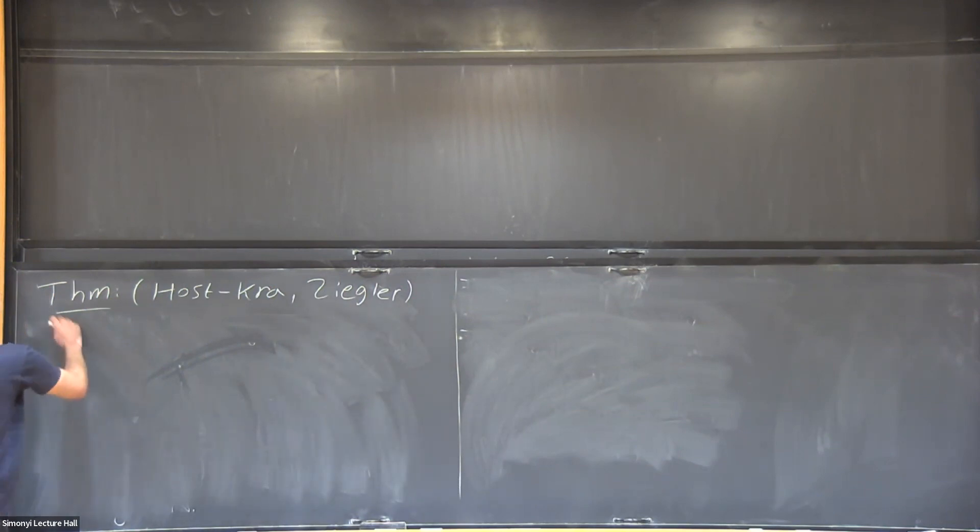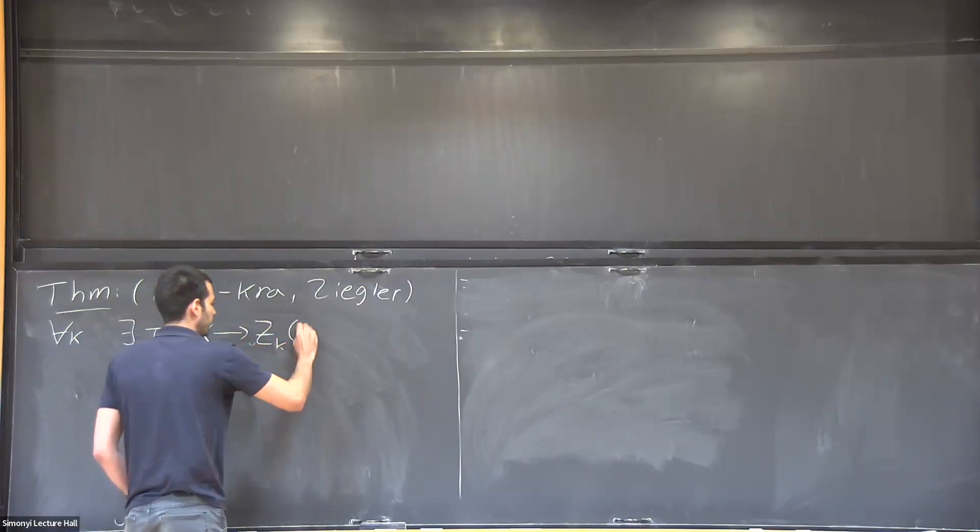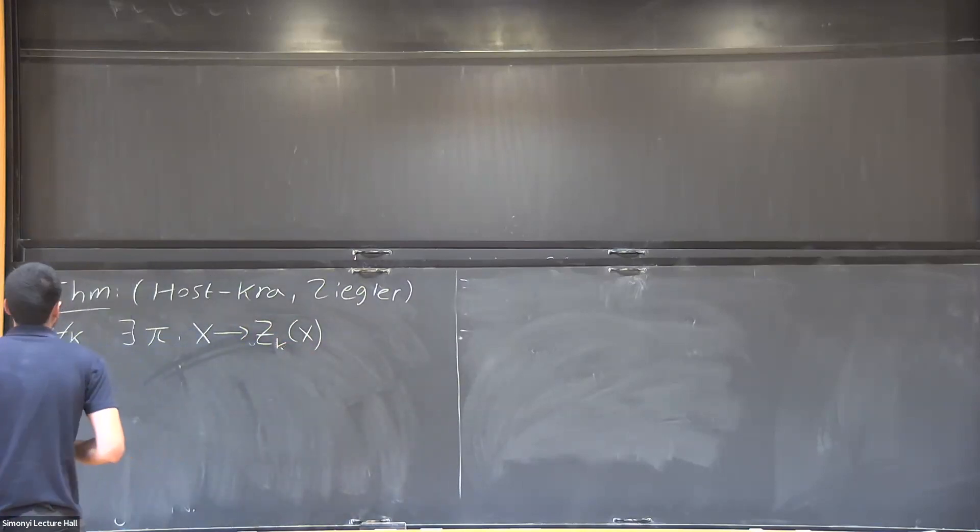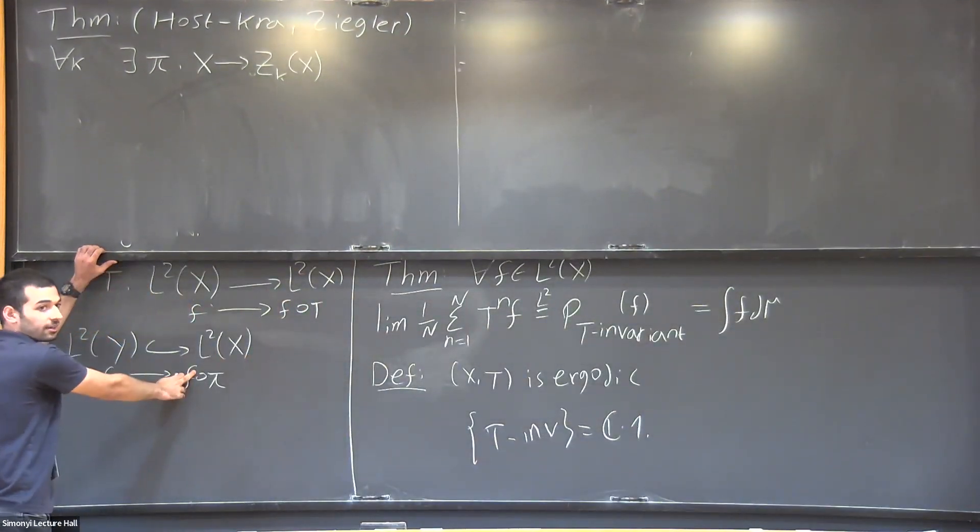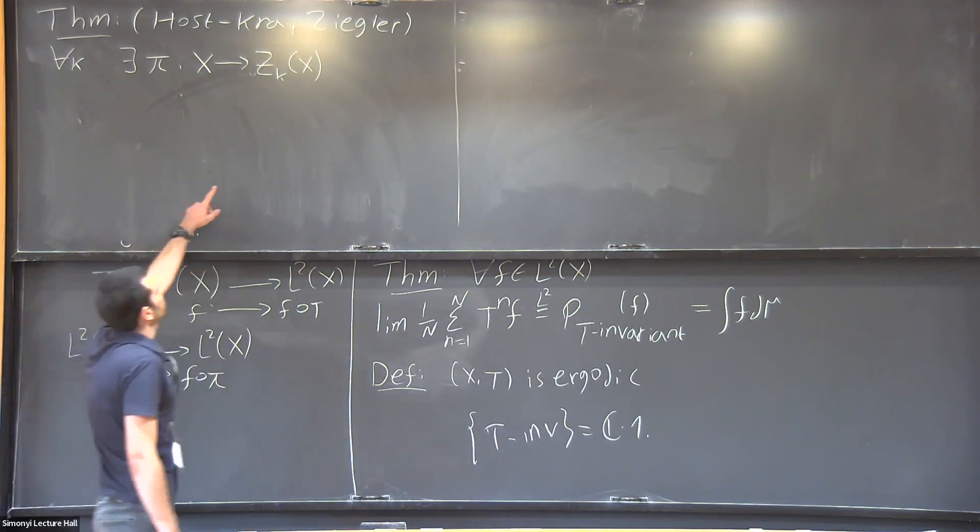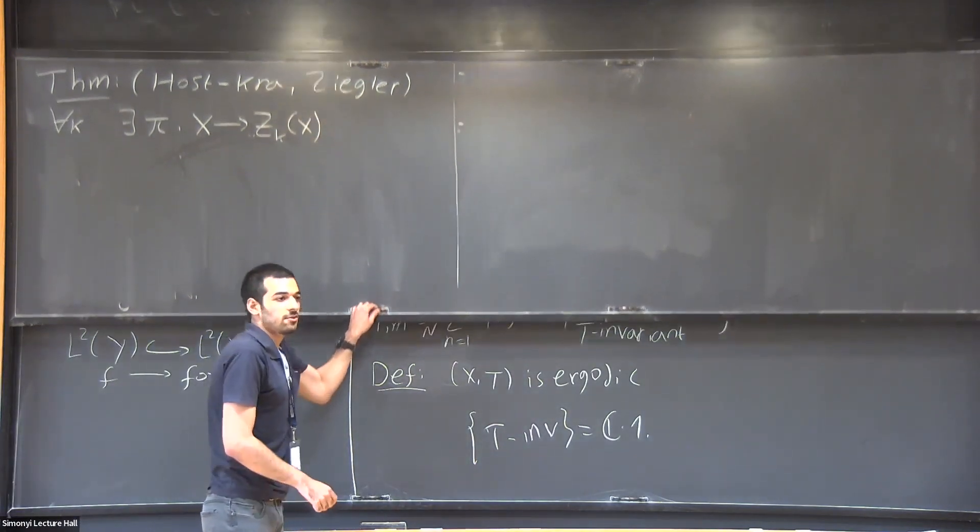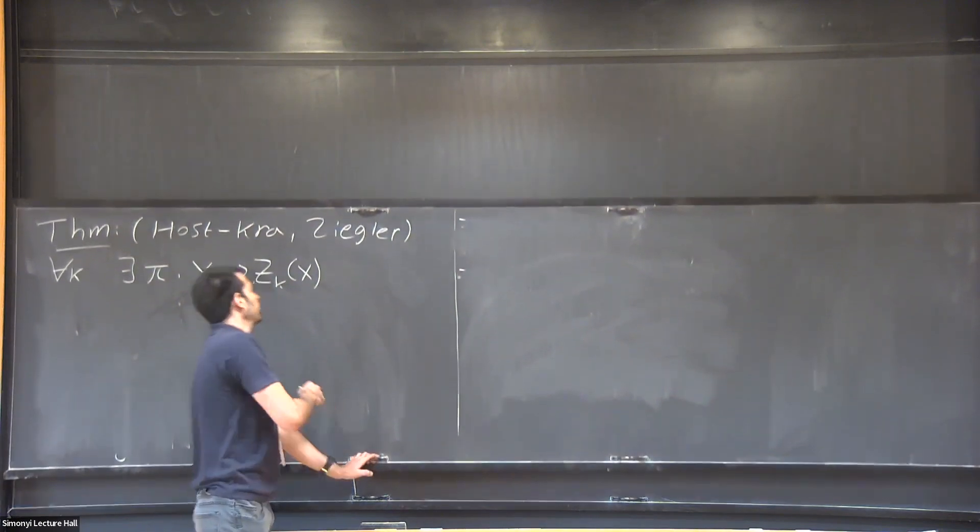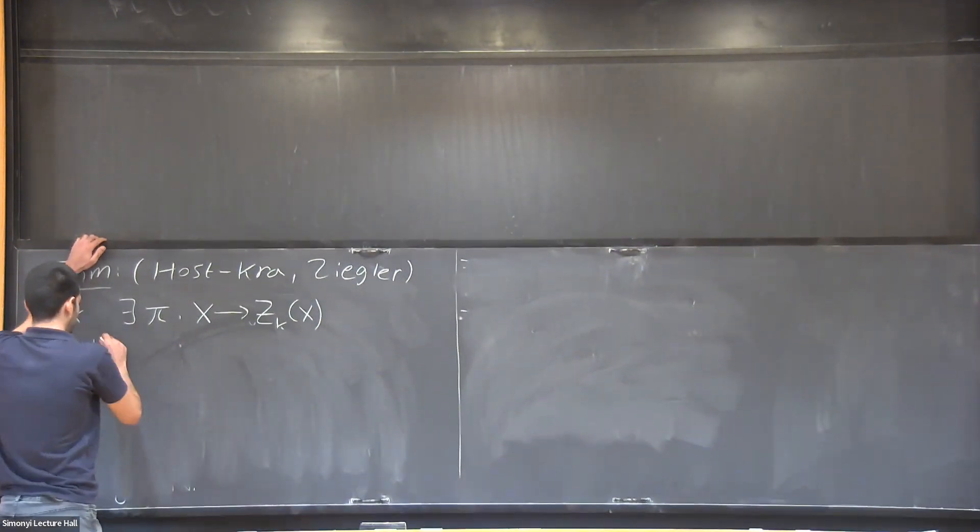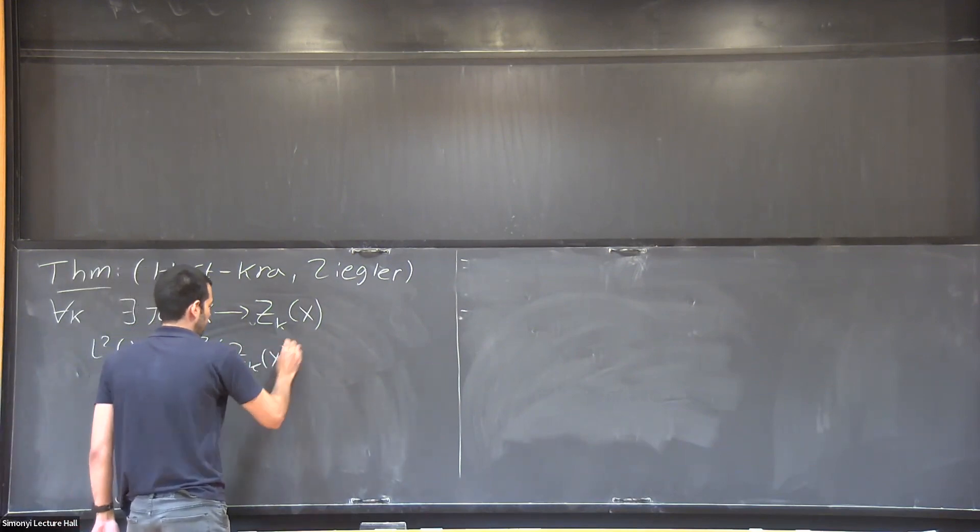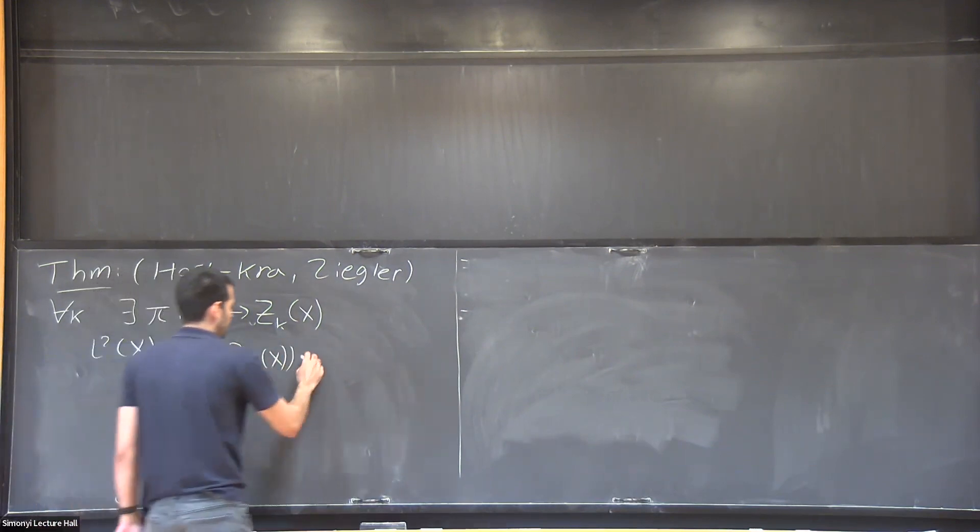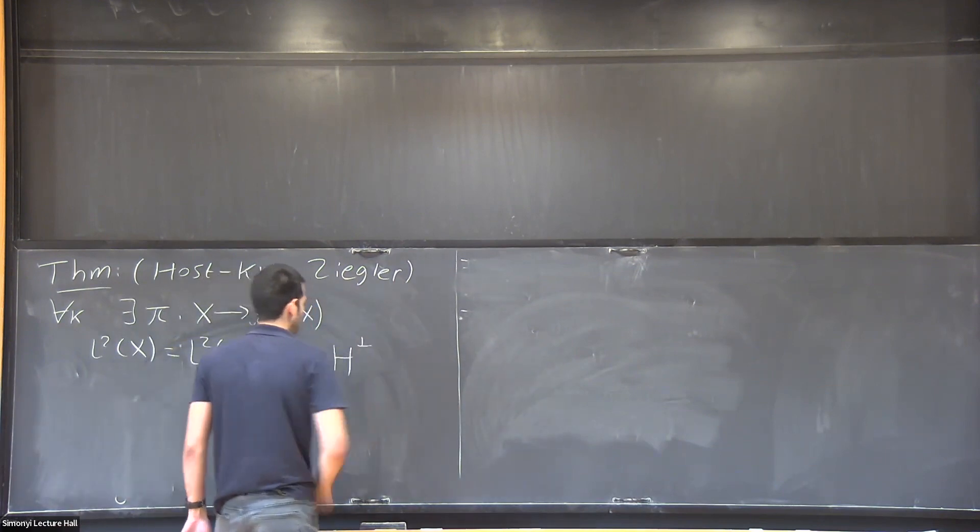And they proved the following: that for every k, one can find a very special factor which we call Z_k(X), and you can see it because we also have an embedding of the Hilbert spaces. So I have an embedding of L2 Z_k(X) in L2 X, which gives me a decomposition, so L2 X decomposes to a Hilbert space isomorphic to L2 Z_k(X) plus an orthogonal part.